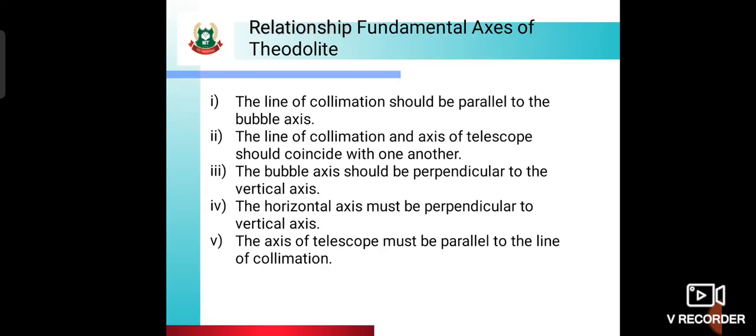Relationship between the fundamental axes of theodolite: what is the relationship between these five? First, the line of collimation should be parallel to the bubble axis. Second, the line of collimation and the axis of the telescope should coincide with one another. Third, the bubble axis should be perpendicular to the vertical axis. Fourth, the horizontal axis must be perpendicular to the vertical axis. Fifth, the axis of the telescope must be parallel to the line of collimation.